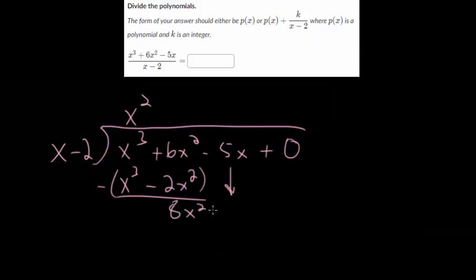Then we bring down the next term and repeat the process. So from there, we ask, what do we multiply x by to get 8x squared? Well, we can multiply by 8x. And 8x times x would be 8x squared. 8x times minus 2 would be minus 16x.